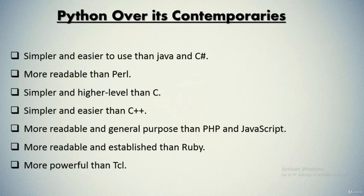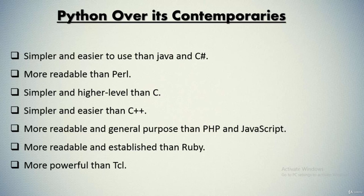Most people find Python easy to learn and fun to use, especially compared with contemporaries like Java, C#, and C++. It is simpler and easier to use than Java and C# because Python uses most English keywords and has less syntactical overhead. For the same reason, it is more readable than Perl, simpler and higher-level than C, and simpler and easier than C++, which is also an object-oriented language. It is also more readable and general-purpose than PHP and JavaScript, more readable and established than Ruby, and more powerful than Tcl.